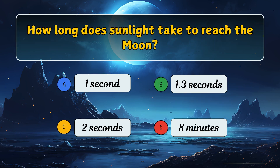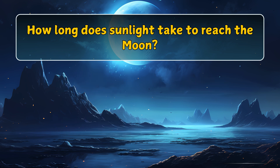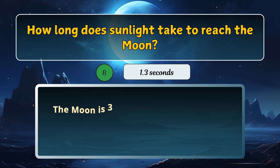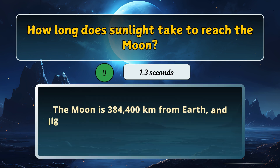How long does sunlight take to reach the moon? Here is the answer: 1.3 seconds.